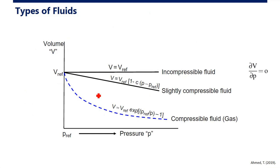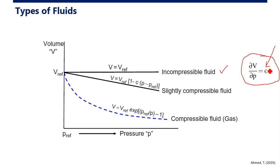This plot expresses the compressibility of each fluid by plotting volume versus pressure. For incompressible fluid, there is no change in volume with respect to pressure — the derivative dV/dP is zero. No matter how much we increase or decrease the pressure, the volume remains constant.